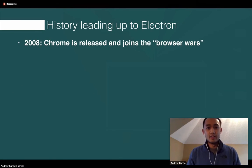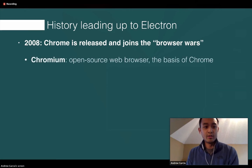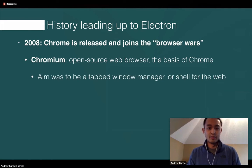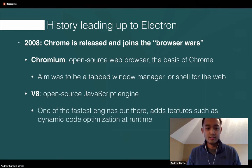So a little history leading up to Electron. In 2008, Chrome is released and it joins the so-called browser wars, which included Firefox and Internet Explorer. That came with Chromium, which is an open source web browser and is the basis of what Chrome is. The goal of Chromium was to be basically a shell for the web, or a tabbed window manager. Also, V8 was developed, which is an open source JavaScript engine — one of the fastest engines at the time.